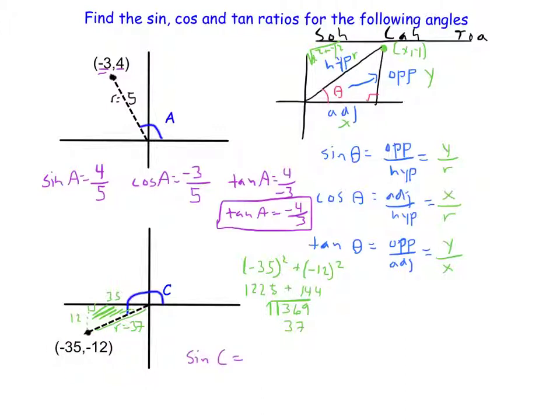Sine. Sine is opposite over hypotenuse. Opposite is a vertical length, Y, so I refer to my vertical length here, negative 12, so sine is going to be negative 12 over the hypotenuse, 37.